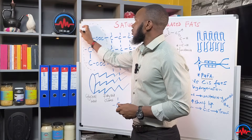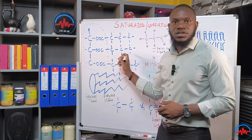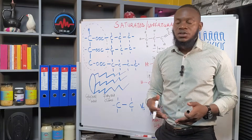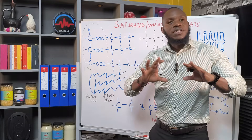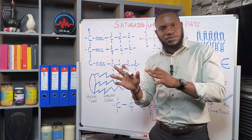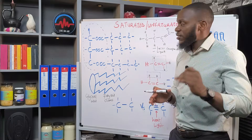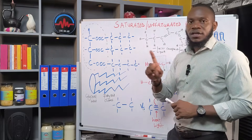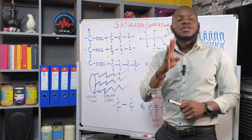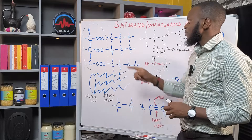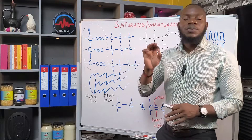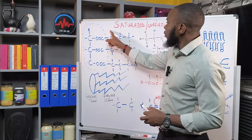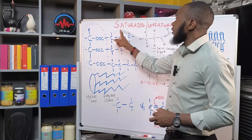We have the glycerol head and then we have these chains, and these chains are the ones that actually determine the saturation or unsaturation of these fats. We have two bigger classes: saturated fats and unsaturated fats. This structure has a chain with carbon atoms, and every single carbon atom is bonded to four hydrogen atoms. When it has four hydrogen atoms it is a complete, very stable carbon atom. That's what we call saturation.